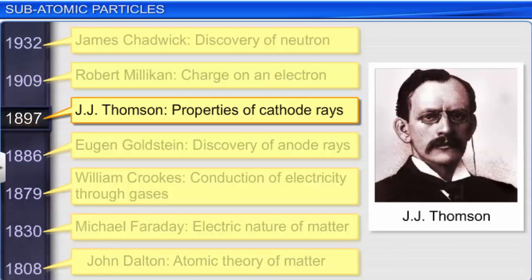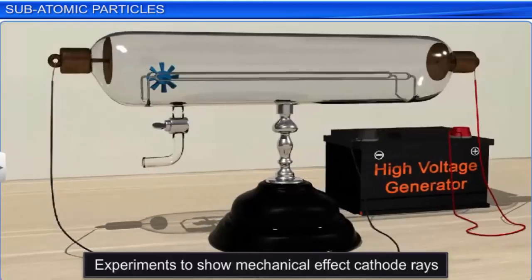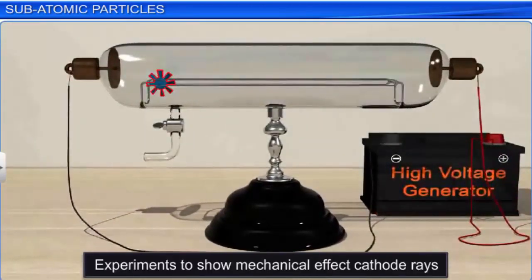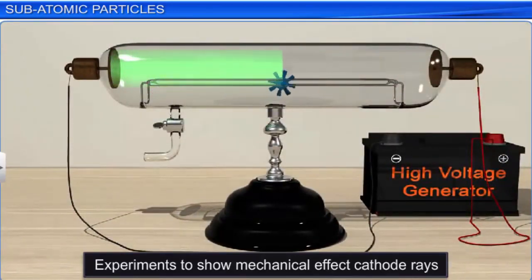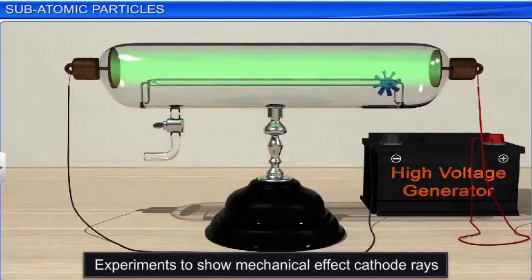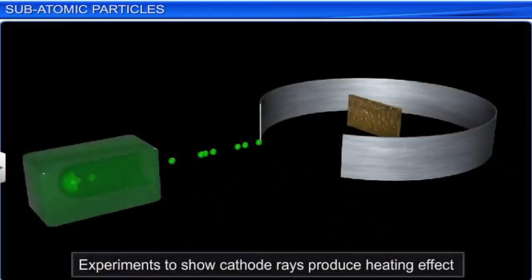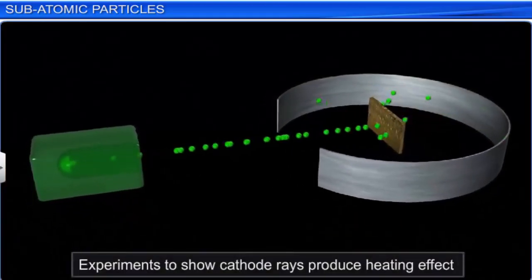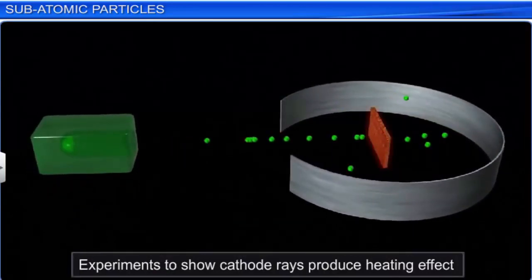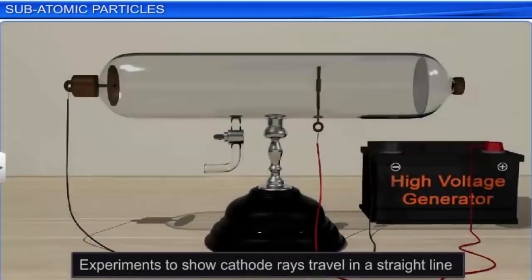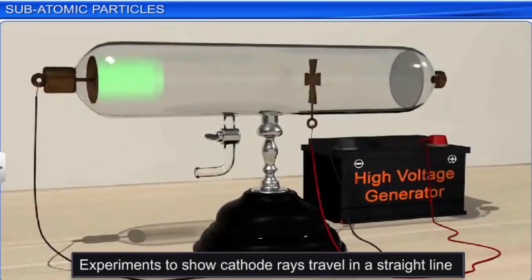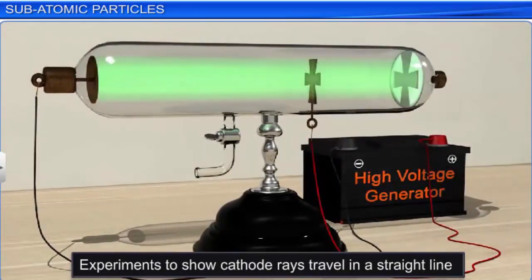In one of his experiments, Thomson observed that if a pinwheel is placed in the path of the cathode rays, the rays caused the pinwheel to rotate — implying that cathode rays are made of material particles that produce a mechanical effect. He then observed that if a metal foil is placed in the path of cathode rays, it becomes hot, implying a heating effect. Thomson also observed that if a solid object is placed in the path of cathode rays, it produced a sharp shadow, indicating that cathode rays travel in a straight line.